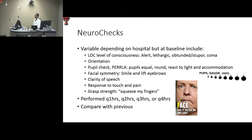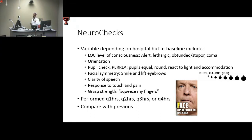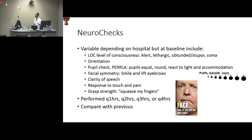Pupil checks are part of neuro checks. You examine whether pupils are equal, round, and reactive to light — PERRL, the cornerstone you'll measure every check. You use a pupil gauge — on a sheet or on your pen — to estimate size in millimeters. You want to track whether the patient's pupils are changing. A change in pupils, a change in the neurologic exam, a change in level of consciousness — that's the most important thing. Think of it like your O2 sat monitor in an ARDS patient, or blood pressure in septic shock.